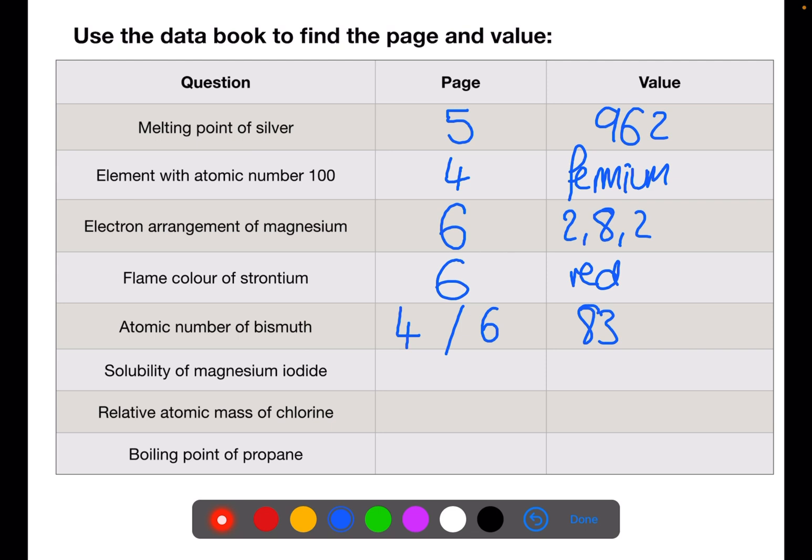The solubility of magnesium iodide can be found on page eight. You read along the magnesium and then down the iodide until they meet and you will find that it is very soluble. The relative atomic mass of chlorine is in the table on page seven which is in alphabetical order and it is 35.5. And finally the boiling point of propane is on page nine in the table of alkanes and it has a boiling point of minus 42.